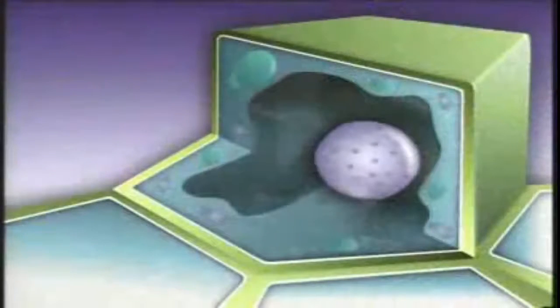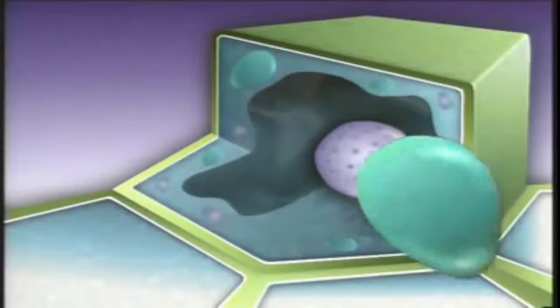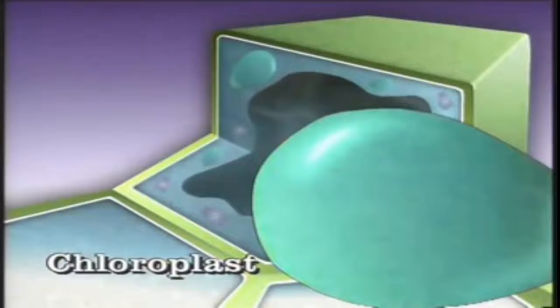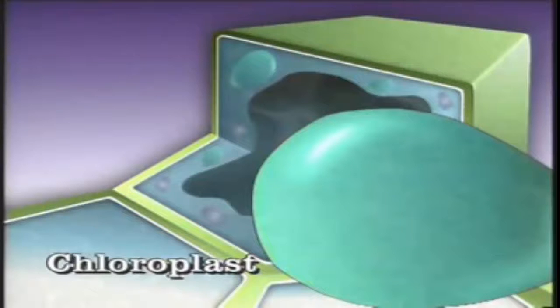Many plant cells, particularly in leaves and stems, have tiny green bodies in them called chloroplasts. Chloroplasts make it possible for plants to manufacture their own food through photosynthesis.